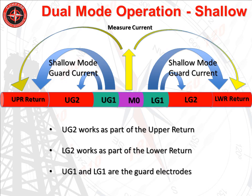This slide shows the electrical configuration for the shallow or short guard mode. For this mode, upper guard 1, the measure electrode, and lower guard 1 are energized with voltage V-measure. The current return is composed of the upper return, upper guard 2, lower guard 2, and the lower return, all held at zero volts. Current flows out of the three middle electrodes, fans out, and returns to the upper and lower return sections. The guard current is not measured — its only job is to focus the measure current. Only the current flowing out of the measure electrode is measured and used to compute R-apparent for the shallow mode.